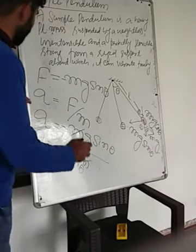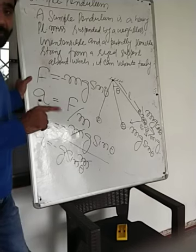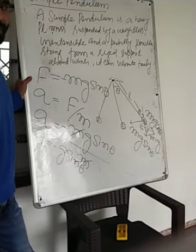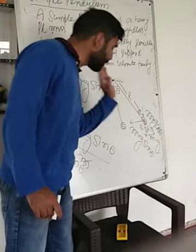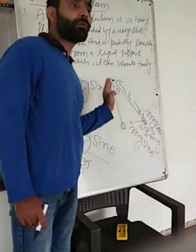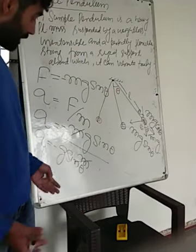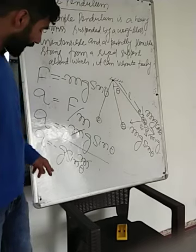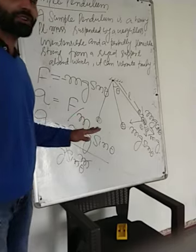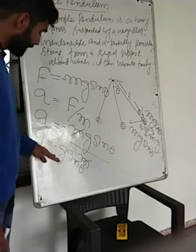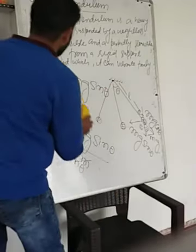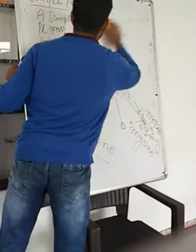Acceleration is directly proportional to displacement but with a negative sign — that will be simple harmonic motion. So the first thing we can see in this simple pendulum is whether the motion is simple harmonic or not. We have to prove that if acceleration is directly proportional to displacement with a negative sign, then it is simple harmonic motion. We have acceleration = −g sinθ.